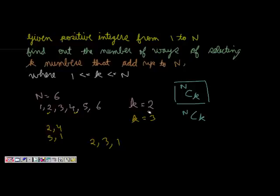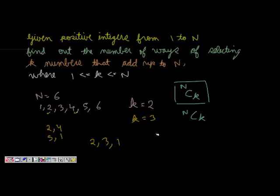One approach that comes to mind is to try all possible combinations using recursion. At each position, we either choose a number or we don't. We choose numbers until we have selected k of them — we cannot choose more than that. One restriction is we have to choose exactly k numbers and they should add up to n. These are the only choices we will count.